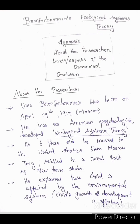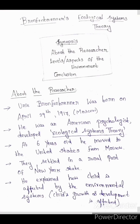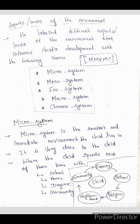He explained how a child is affected by the environmental system — that a child's growth and development is affected by the ecological system. He labeled different aspects or levels of the environment that influence child development with the following names: Microsystem, Mesosystem, Exosystem, Macrosystem, and Chronosystem. You can remember them with the mnemonic M, M, E, M, C.